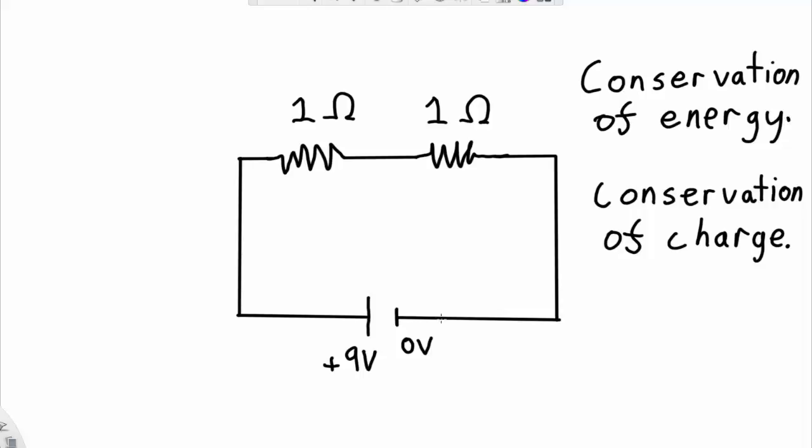Conservation of energy states that if there's any loop in the circuit, so in this case our circuit forms a nice loop, then the total voltage, if you start at one point in the loop and you go all the way around, you must end with the same energy that you started with.